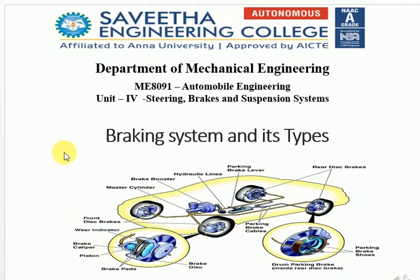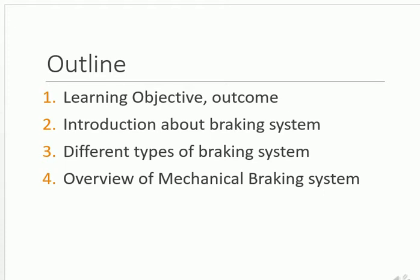Hello, hi everyone. In this session we're going to discuss the braking system, which comes under automobile engineering unit number four, which covers steering, brakes, and suspension systems — collectively called the control systems of an automobile. The outline of this presentation will be the learning objective, the outcome, introduction about the braking system, and different types of braking systems.